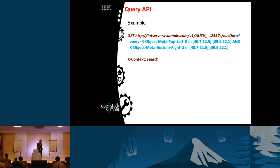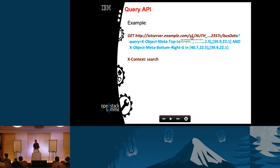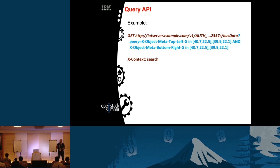The overall architecture has a Swift cluster with proxy nodes and storage nodes, an Elasticsearch cluster at the side, and a load balancer. Requests hit the load balancer, which routes to one of the proxies that has the indexer with RabbitMQ for indexing, or the search middleware for forwarding query requests to Elasticsearch. The query API uses a standard GET request structure: host, V1, account name, and container. Requests targeted at the account level search all objects across all containers.